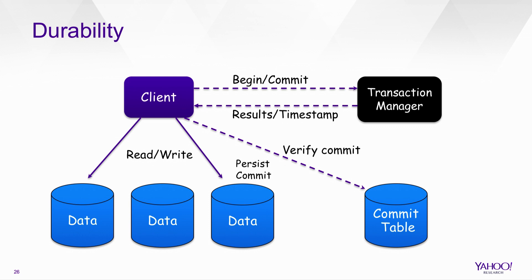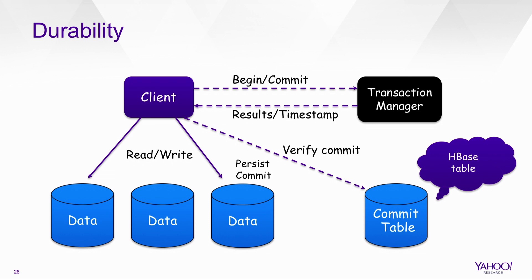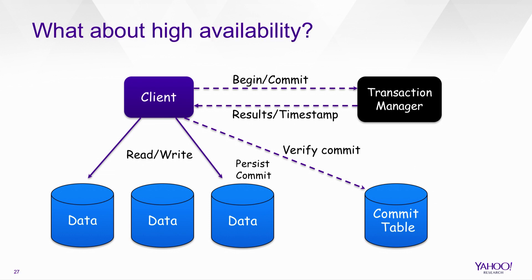We have a post-commit procedure: after the transaction commits, an asynchronous thread adds a shadow cell to each written entry, containing the commit timestamp. Once added to all entries, the commit table entry can be removed. Now when a new client T3 reads, it finds the shadow cell T2 directly in the data table without going to the commit table. There's a race condition — sometimes we need to fall back to the commit table — but in most cases the shadow cell is there and performance is excellent. Durability is guaranteed because the commit is either in the commit table or in the shadow cells.